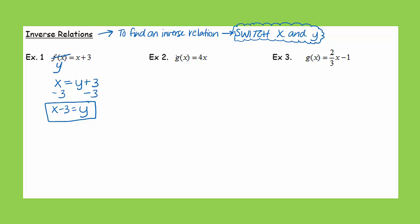For the second example, we have g of x equals 4x. Can you think about what the first thing I said to do here was? It was to cross out the g of x and replace it with a y so we can switch x and y. So that's going to be my next step.